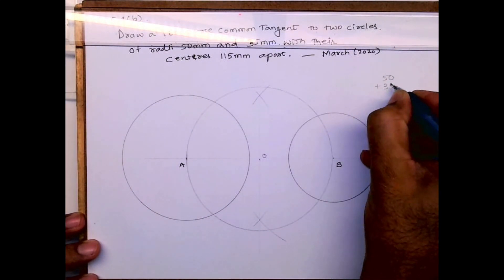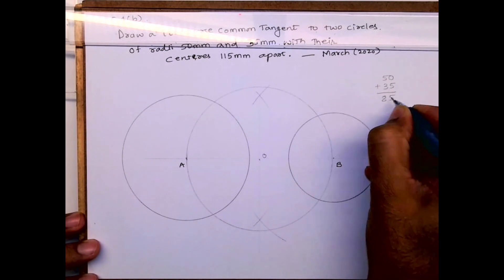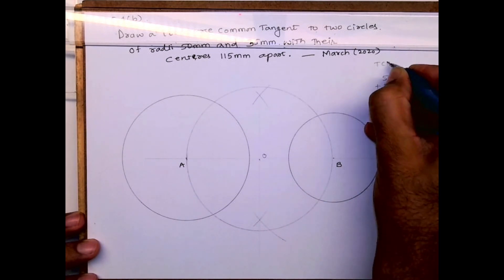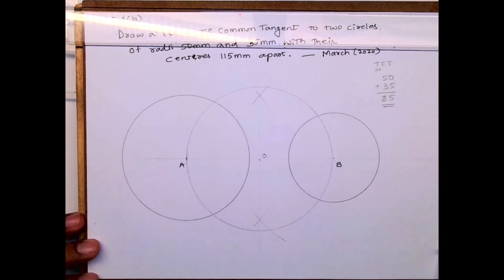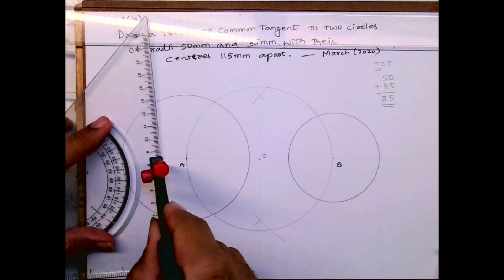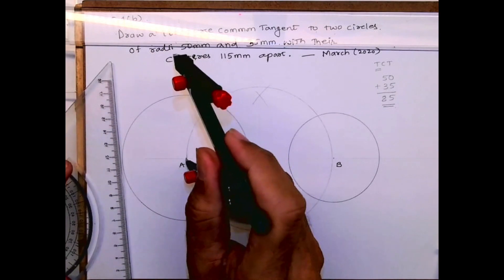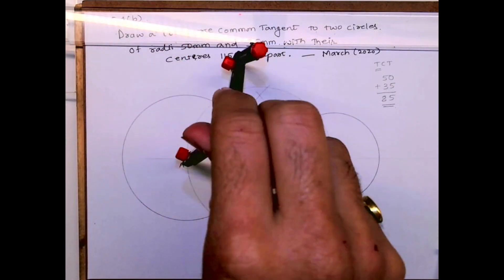After that, see 50 plus 35 is how much? 85. Now why I'm doing this? Because it is TCT, transverse common tangent. So I'm assuming, I'm remembering that T is for total. So I'm adding both the radius and I'm drawing circle.